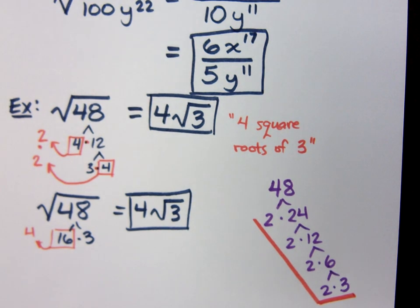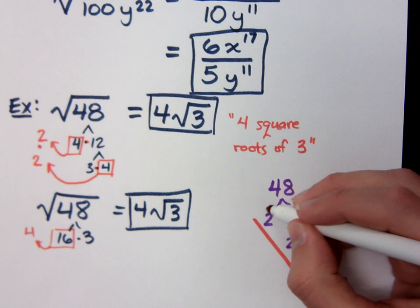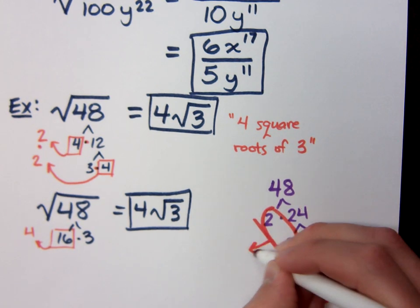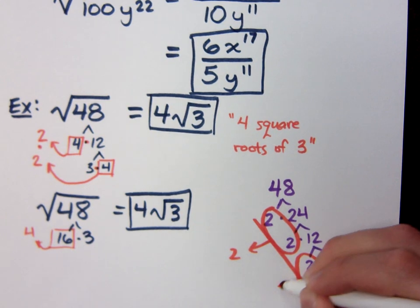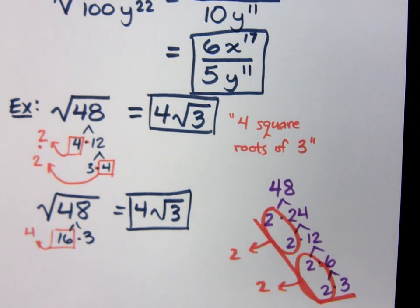Since I'm in the square root, I need 2 of the same factor to bring out anybody. So here's one pair of 2s that gives me a 2 on the outside, and here's another pair of 2s to give me a 2 on the outside. And I multiply those guys together to give me the 4. Yay and hooray? Yay.